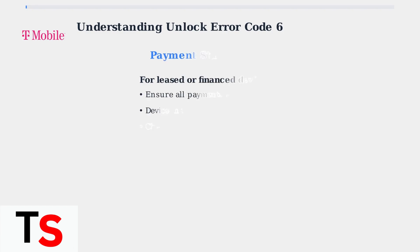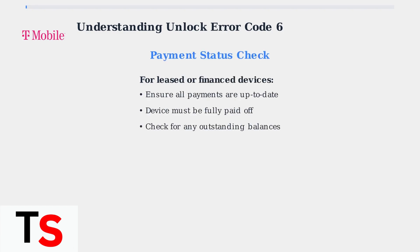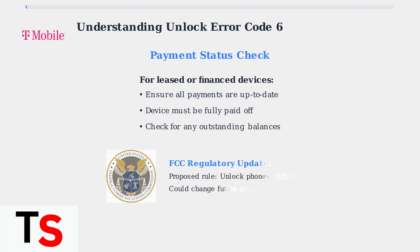If your device is leased or financed, ensure all payments are up to date and the device is fully paid off. Any outstanding balances can trigger Error Code 6. The FCC is proposing new rules requiring mobile providers to unlock phones within 60 days of activation, which could significantly change unlocking policies in the future, making the process more streamlined for consumers.